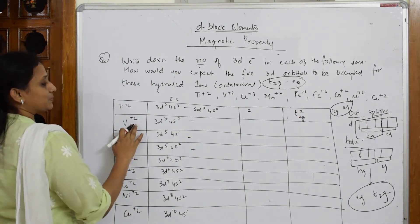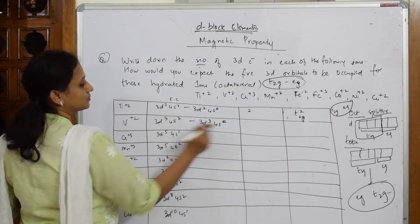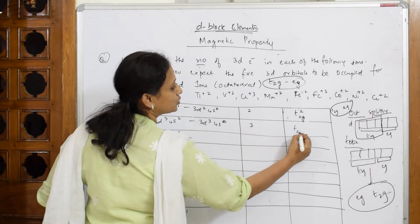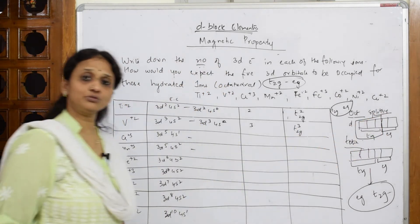You have to write the 2 above. Let us start for this. Now, V plus 2. So this becomes 3D³ 4S⁰. So 3. How should I write? T2G³. Because first T2G only 3 will fill and then you have to go to EG set.